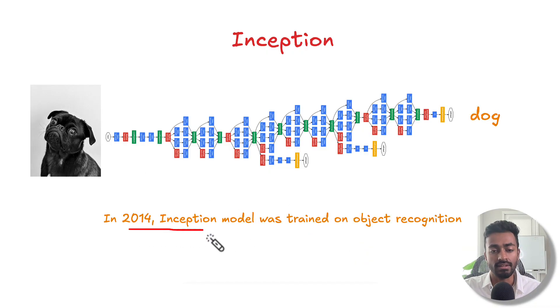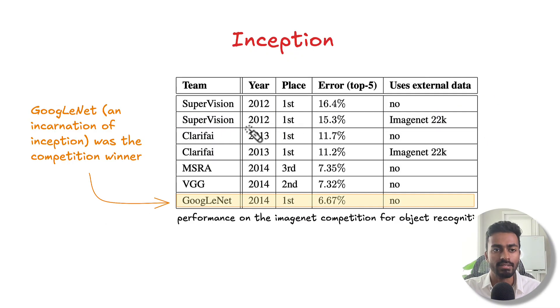In 2014 the inception model was trained on object recognition. This network would take in an image and output the object category. GoogleNet which was an incarnation of this inception model was the competition winner in 2014, specifically the ImageNet competition. This is a big deal and hence we are learning about it.